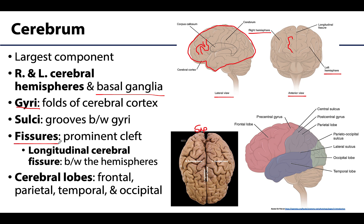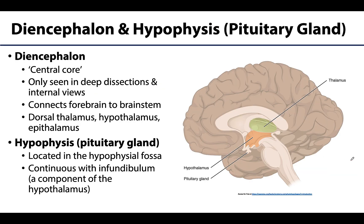In certain areas there are more prominent separations or clefts that separate certain components of the cerebrum, and these are referred to as fissures. The largest and most dominant is the longitudinal cerebral fissure, located between the right and left cerebral hemispheres. Each cerebral hemisphere is divided conceptually into various lobes: specifically the frontal, parietal, temporal, and occipital lobes. They are named after the surrounding bones, but they do not match up exactly to those overlying bones.